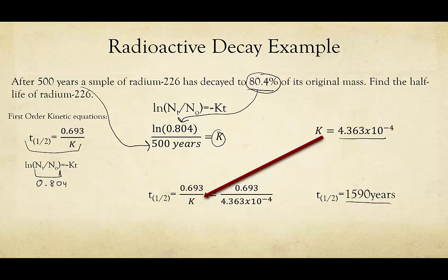1,590 years is a useful number we can use from now on for radium-226. Of course, you'd also want to know how to do this in reverse — if given the half-life and the percent decay, you'd want to know how old something is. We'll do an example of that later on.